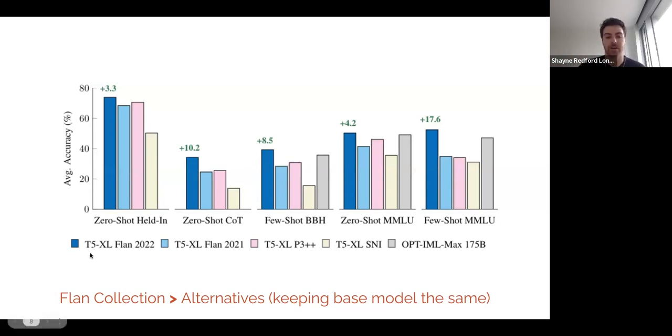We do find that the T5-XL using the full Flan collection as the dark blue achieves better results than if we use the original Flan collection from 2021, or if we use all of the datasets and prompt sources from which T0 was trained on, or Supernatural Instructions. Now, these are all academic compilations of datasets which were the best at the time, but they're also not distilled from larger models like Alpaca was, so the data is less restrictively licensed.